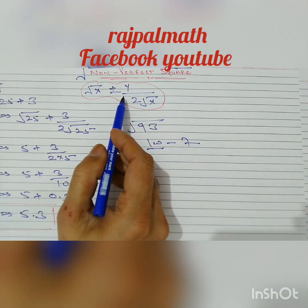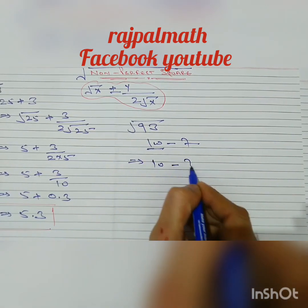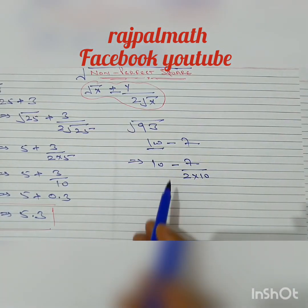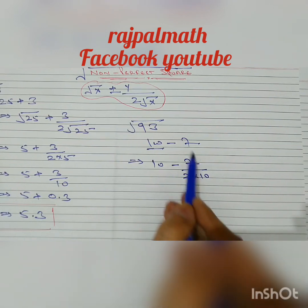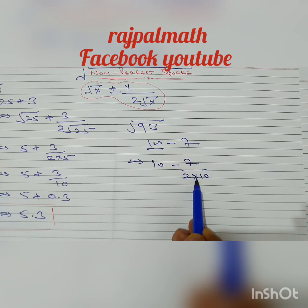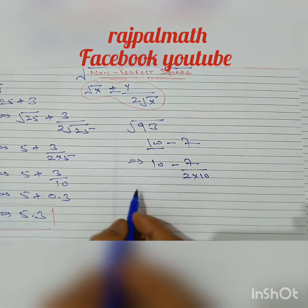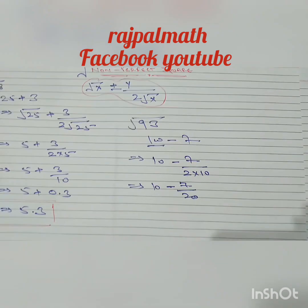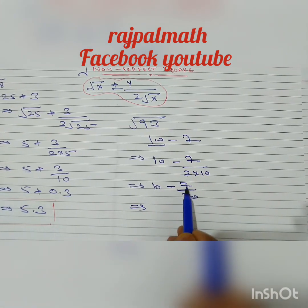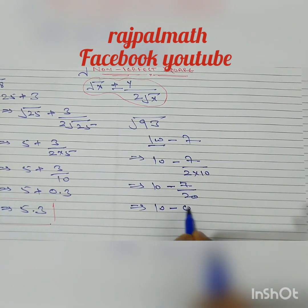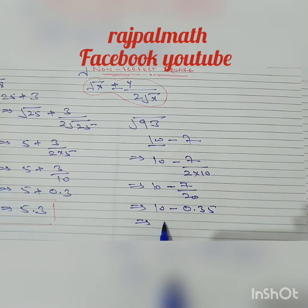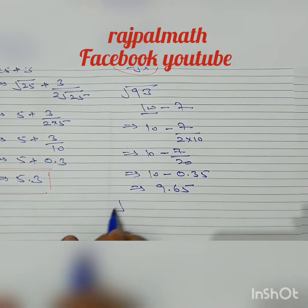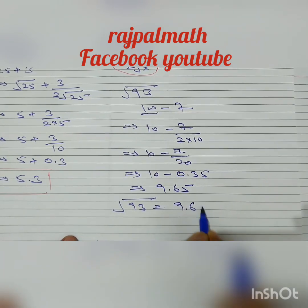Applying the same formula: under root of 100 minus 7 over (2 times under root 100), since under root of 100 is 10, this equals 10 minus 7 divided by (2 times 10), which is 10 minus 7 by 20. 7 divided by 20 is 0.35, so we get 10 minus 0.35.